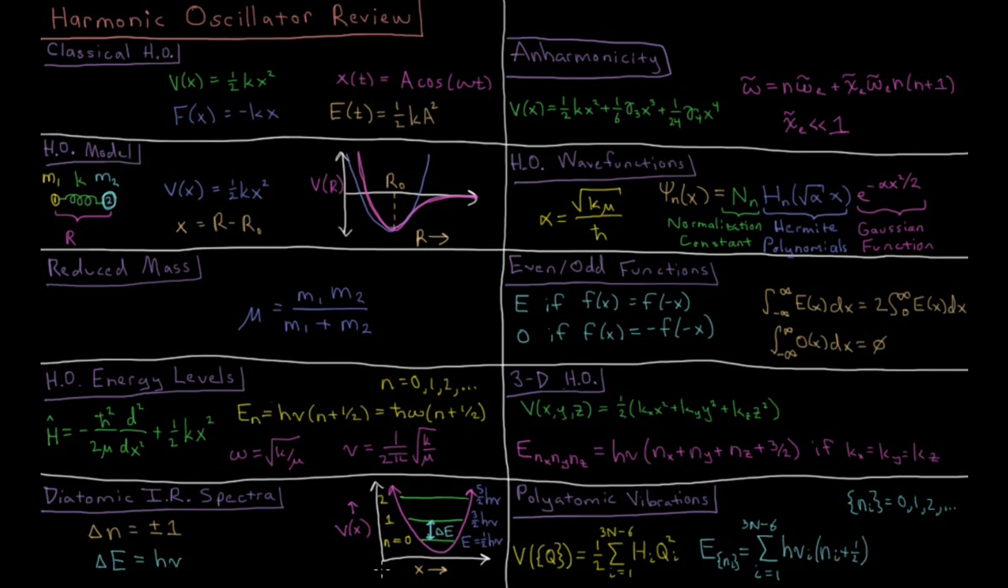Moving to polyatomic vibrations, if we have some polyatomic molecule with N atoms, there are 3N minus 6 vibrational modes if it is non-linear, and if it's linear there are 3N minus 5. It works basically the same way but you work in terms of things called normal coordinates.